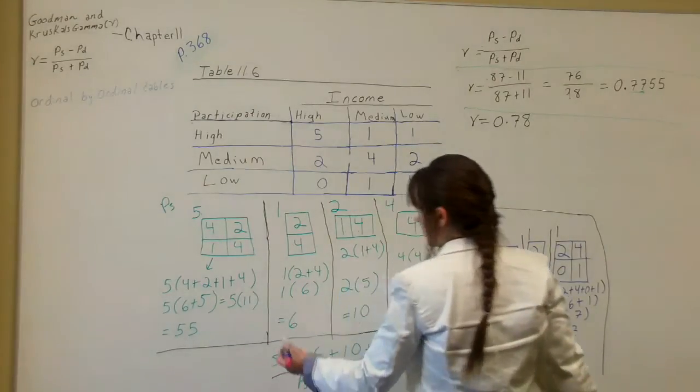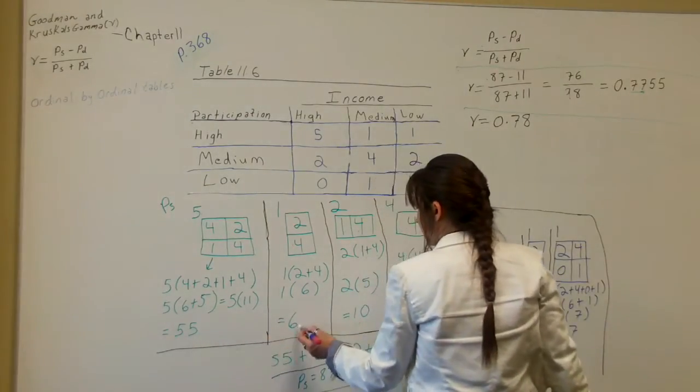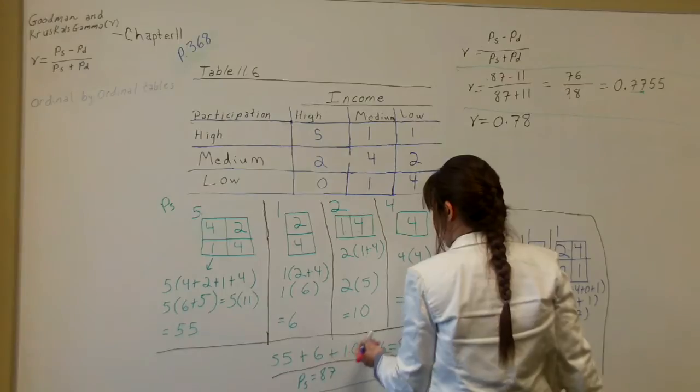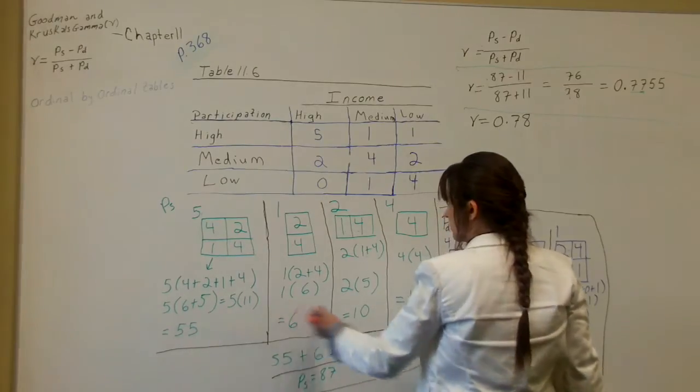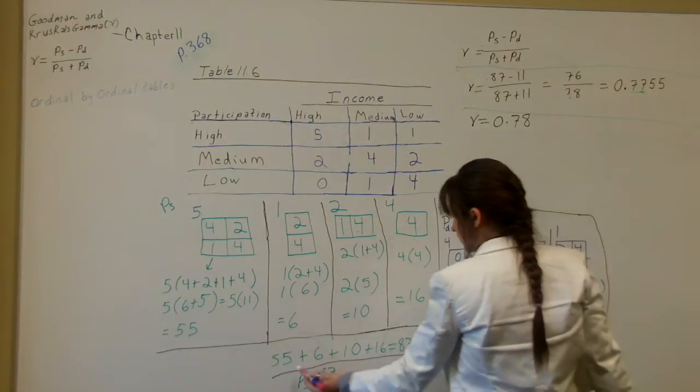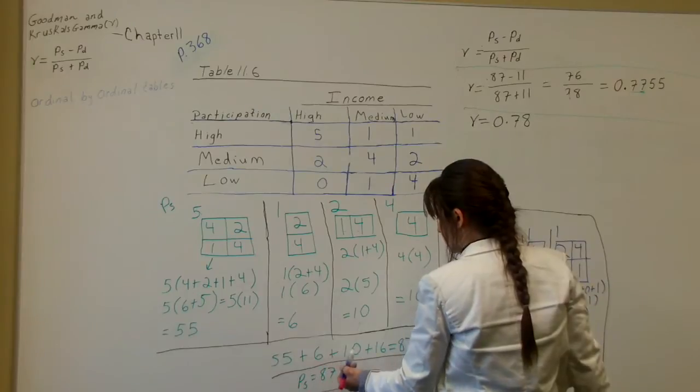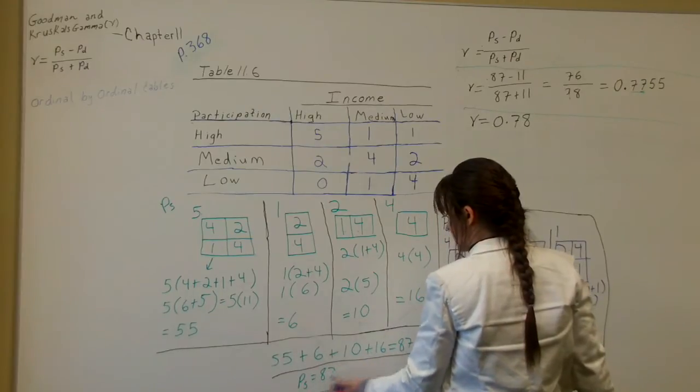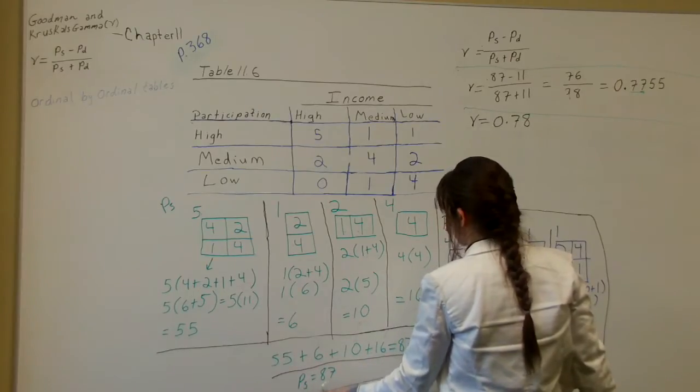Now for the last stage to figure out the P subscript S, what we're going to do is 55 plus 6 plus 10 plus 16. Those are totals from each one of those we figured out. So 55 plus 6 plus 10 plus 16 equals 87. So the P subscript S equals 87.